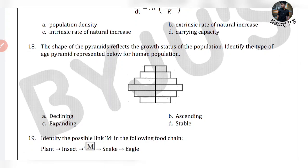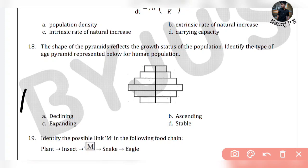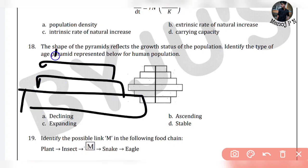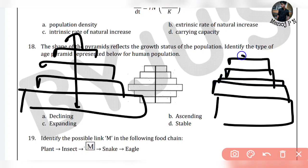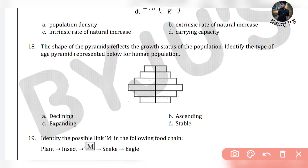Question 18: the shape of pyramids reflects the growth state of the population. Identify the type of age pyramid represented below from human population. There are three types of pyramids. This one shown is a stable pyramid versus a declining pyramid. So this is option A: declining pyramid.